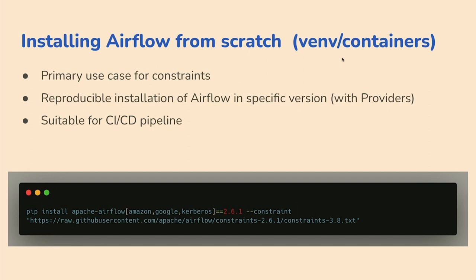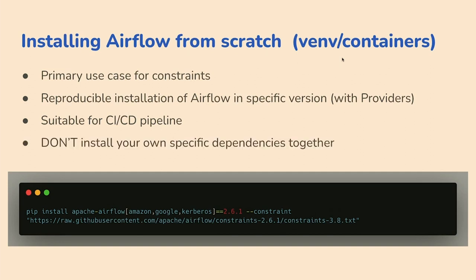The basic use case: install Airflow, specify providers as extras, the Airflow version, the constraint file URL — and that's it. This provides a reproducible installation and is very suitable for CI pipelines when you want to build your image or environment. The trick — and this is the first problem people have — if you want to install your own additional dependencies, don't do it in this same step.